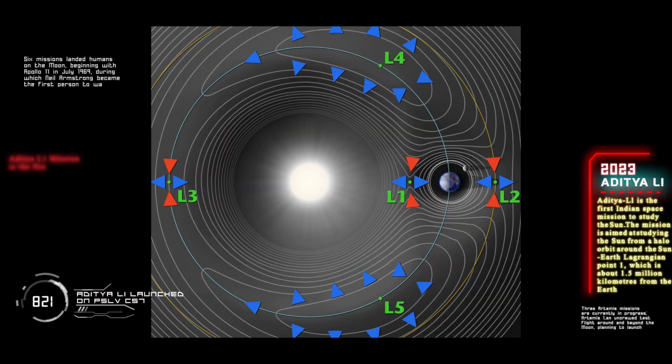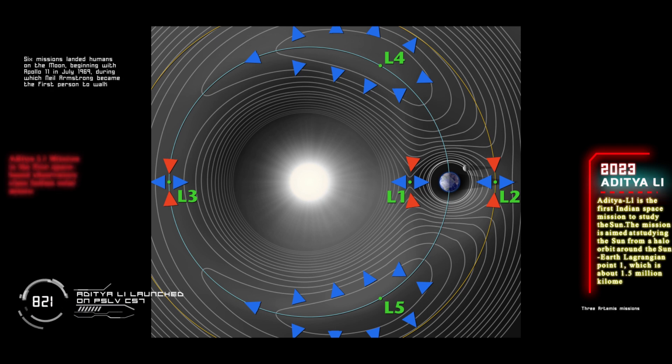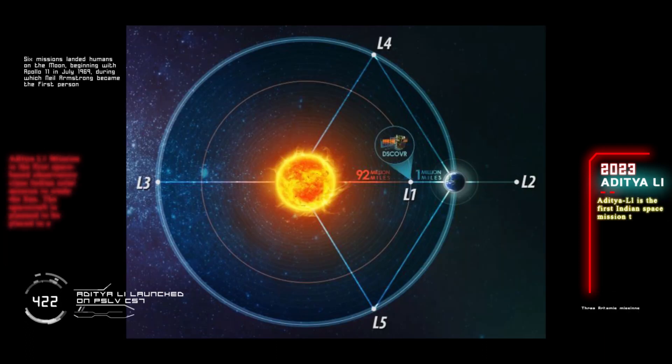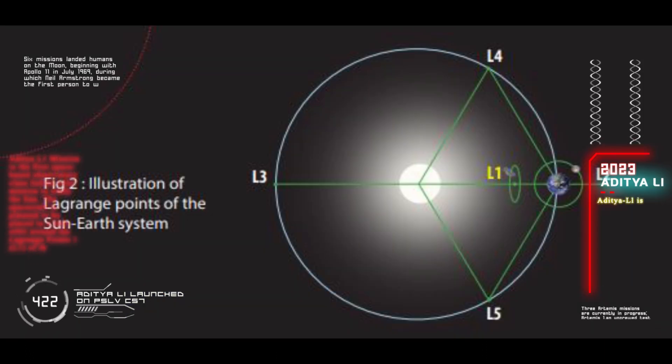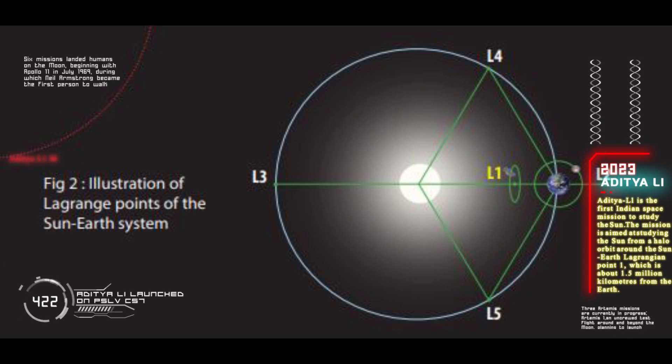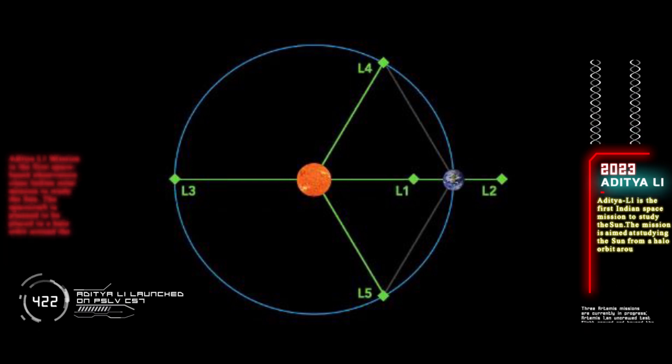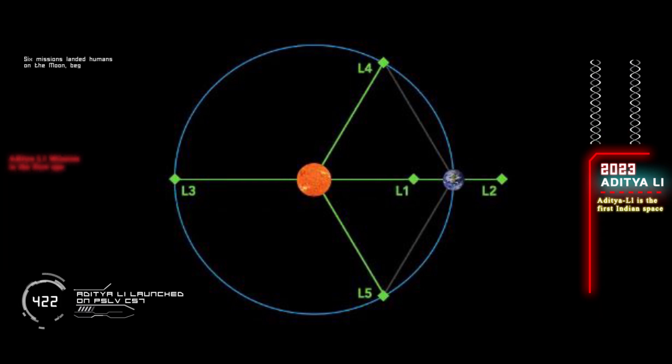Lagrangian points are specific locations in space where gravitational forces of two large celestial bodies, such as the Earth and the Sun, cancel each other out, allowing a satellite or spacecraft to hover. Once Aditya L1 reaches this parking spot, it would be able to orbit the Sun at the same rate as the Earth. According to scientists, there are five Lagrangian points or parking areas between the Earth and the Sun where a small object tends to stay if put there. These points in space can be used by spacecraft to remain there with reduced fuel consumption.